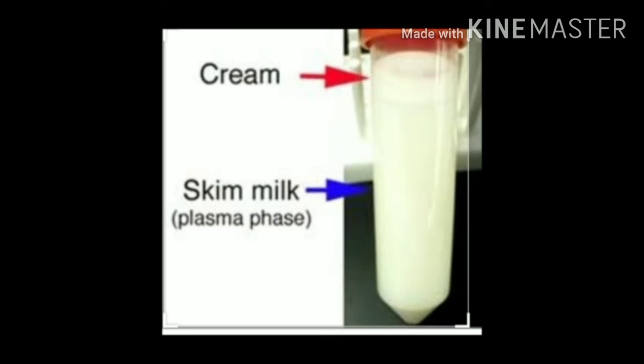This method of separating solid particles suspended in a liquid is called centrifugation. Sometimes solid particles in a liquid are too small and pass through filter paper; these can be separated with a centrifugal machine rotated at very high speed. The principle is that denser particles are forced to the bottom and lighter particles stay at the top when spun rapidly. In a suspension, heavier particles settle to the bottom of the test tube.